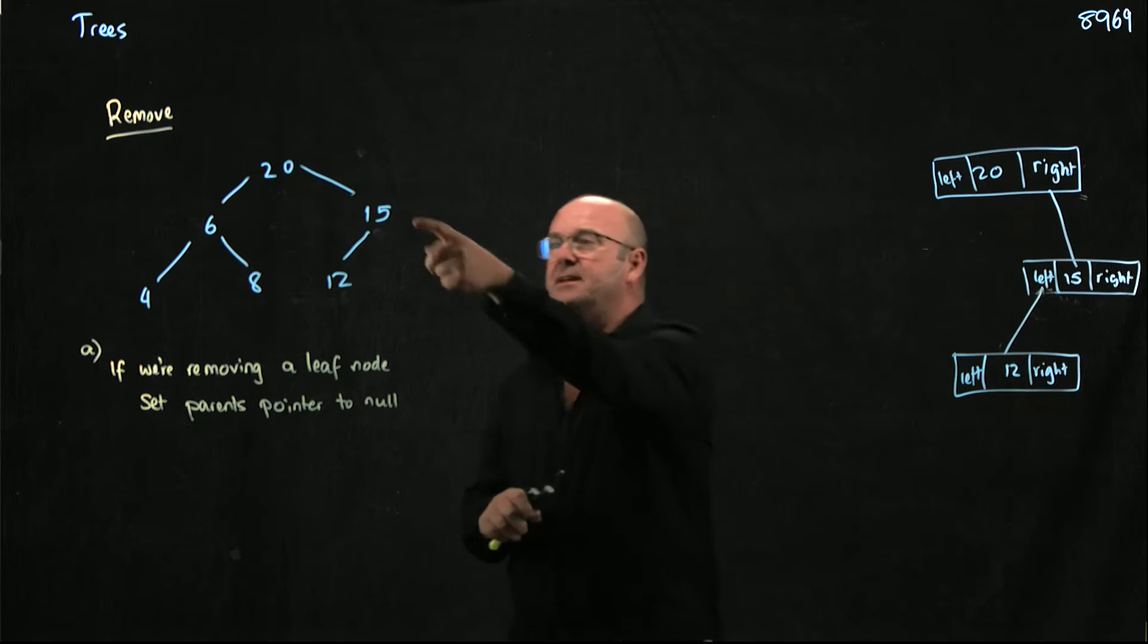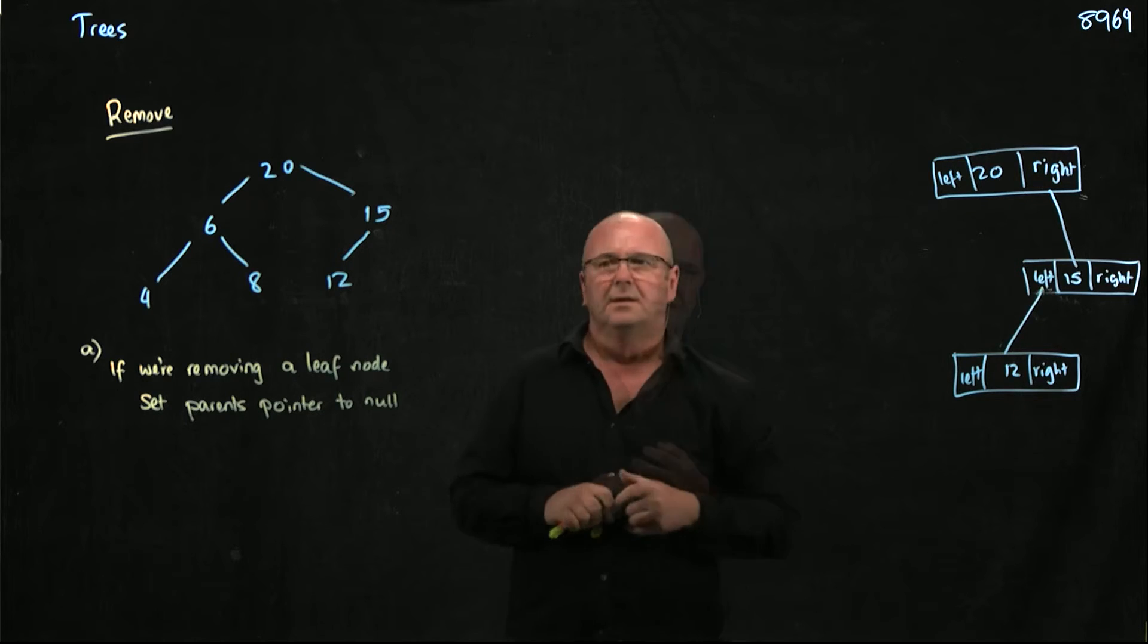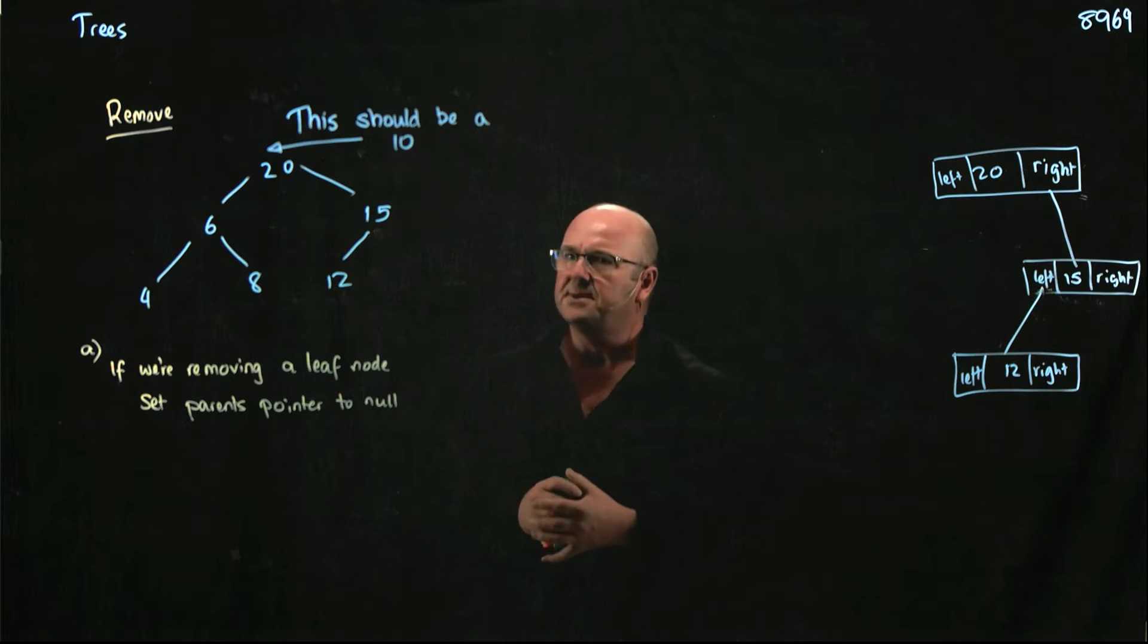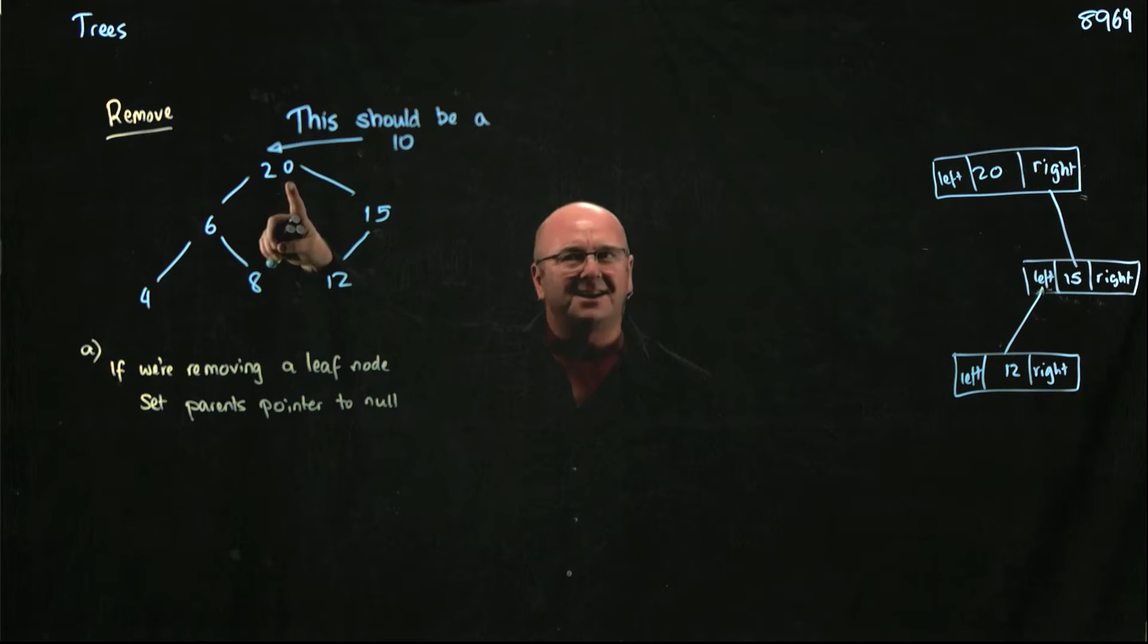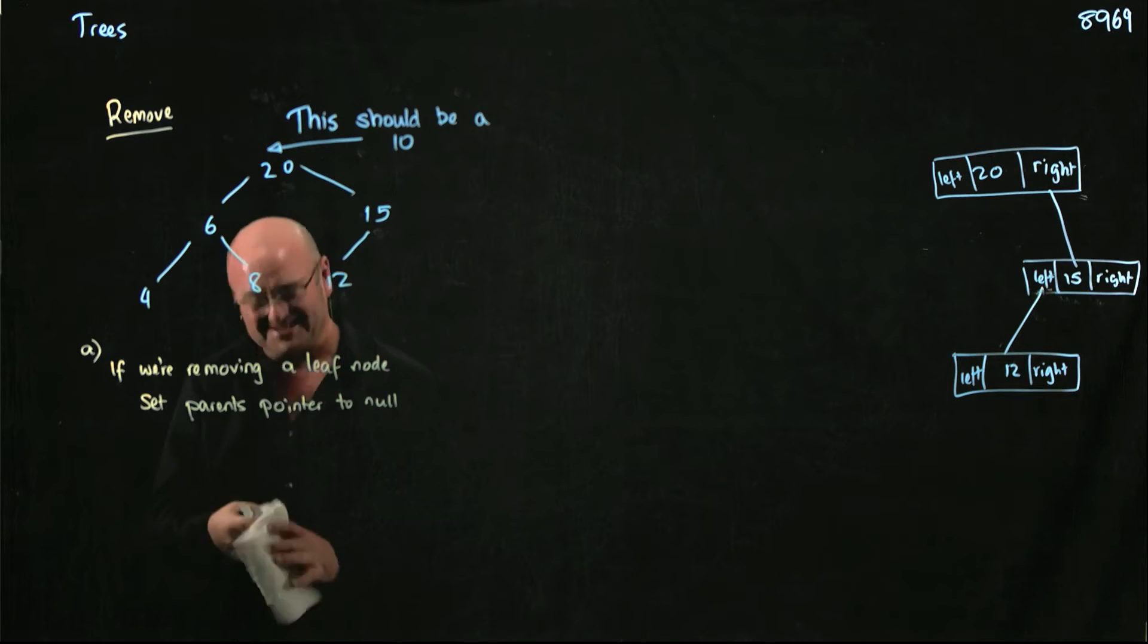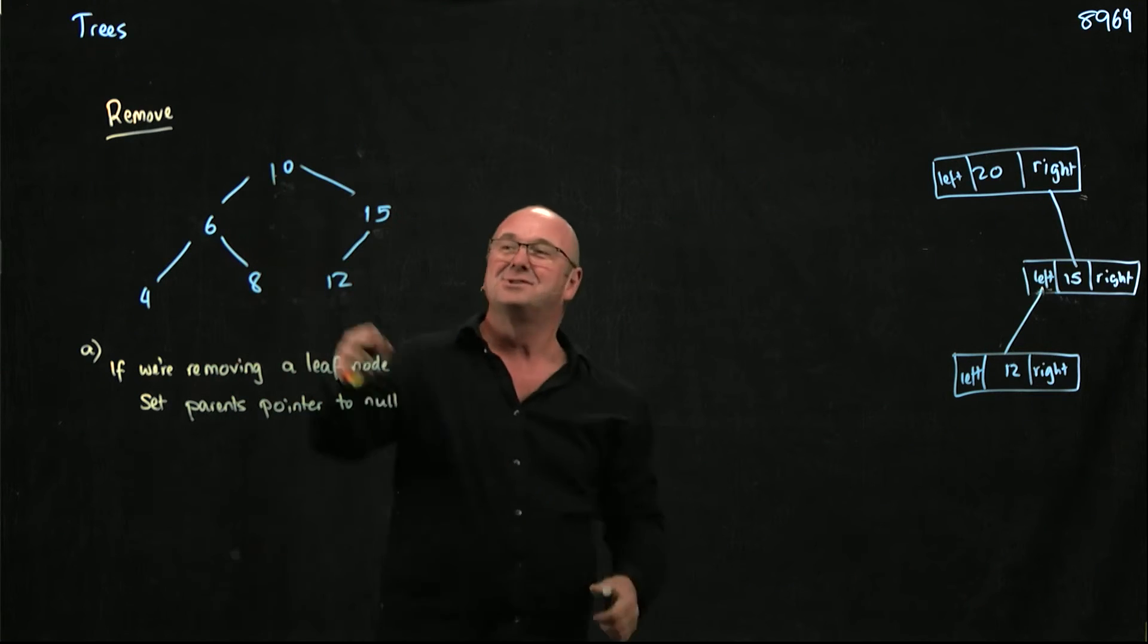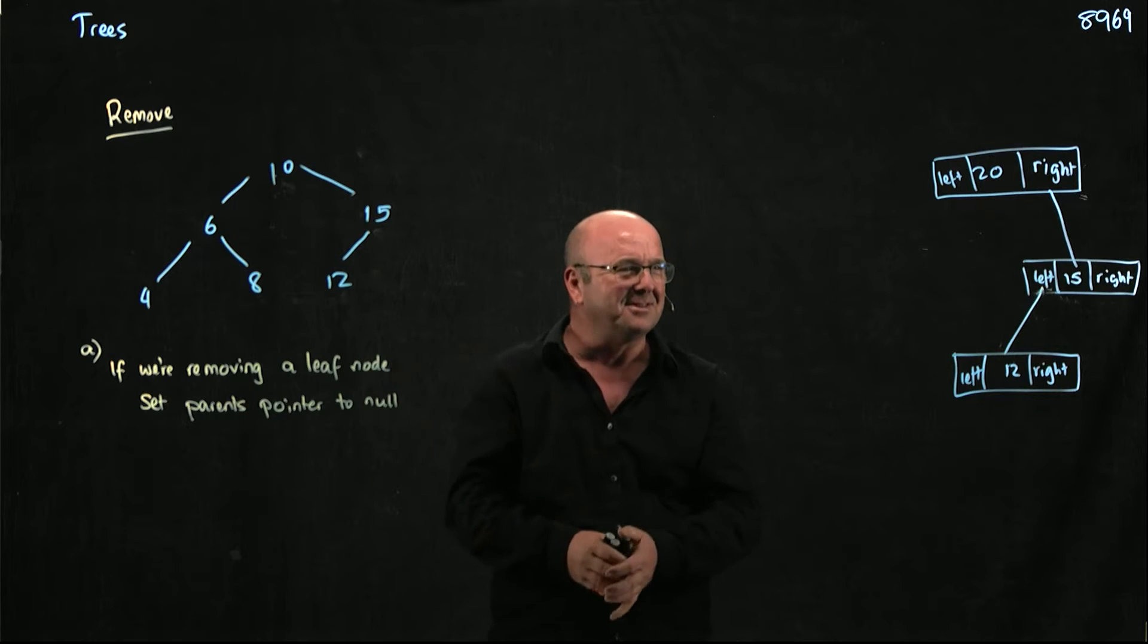What about if I want to remove the 15? How do I remove the 15? The 15 only has one child. It has the 12. So if we took away the 15, where would the 12 end up? It would be... Well, it should not end up in the ether. It should end up as 20's right child, yeah? No. It shouldn't. I guess my tree's wrong. That should be a 10. It should end up as 10's right child. You guys didn't notice that my tree was completely wrong the whole time.